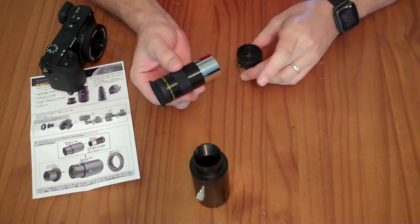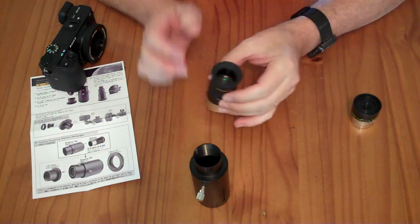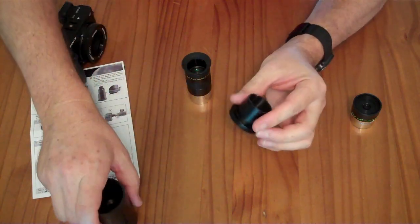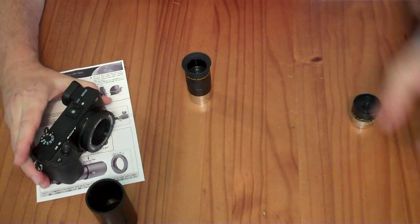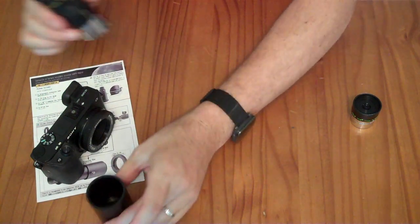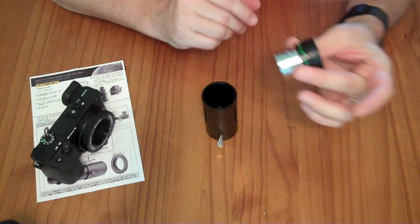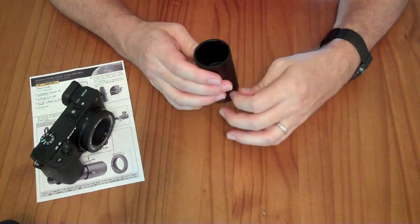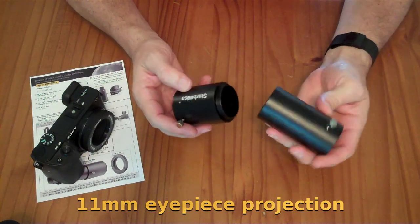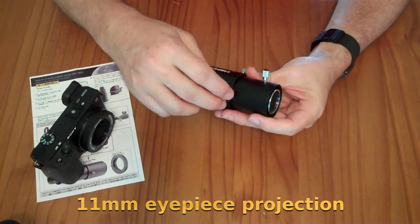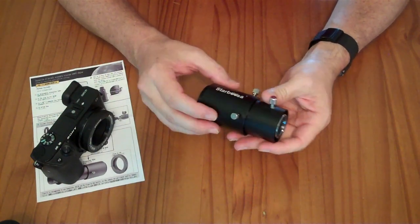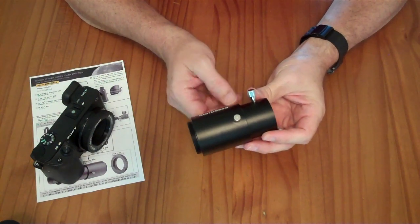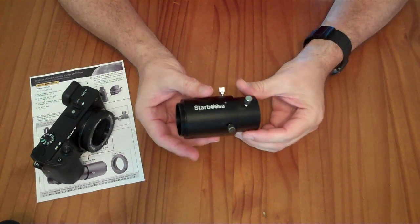What I found with my Meade ETX-90, which has a focal length of 1,250 millimeters, is that the view with simply the camera directly attached to the telescope, just with the eyepiece adapter like that, was very similar in size to an eyepiece, the 26 millimeter eyepiece inside of the eyepiece holder. Now when I swapped out to the 11 millimeter eyepiece, which is a significant amount of magnification, probably more than you really want to be using with that telescope, then the view through the camera and this guy here was pretty equivalent to what I was seeing with my eye through the eyepiece.